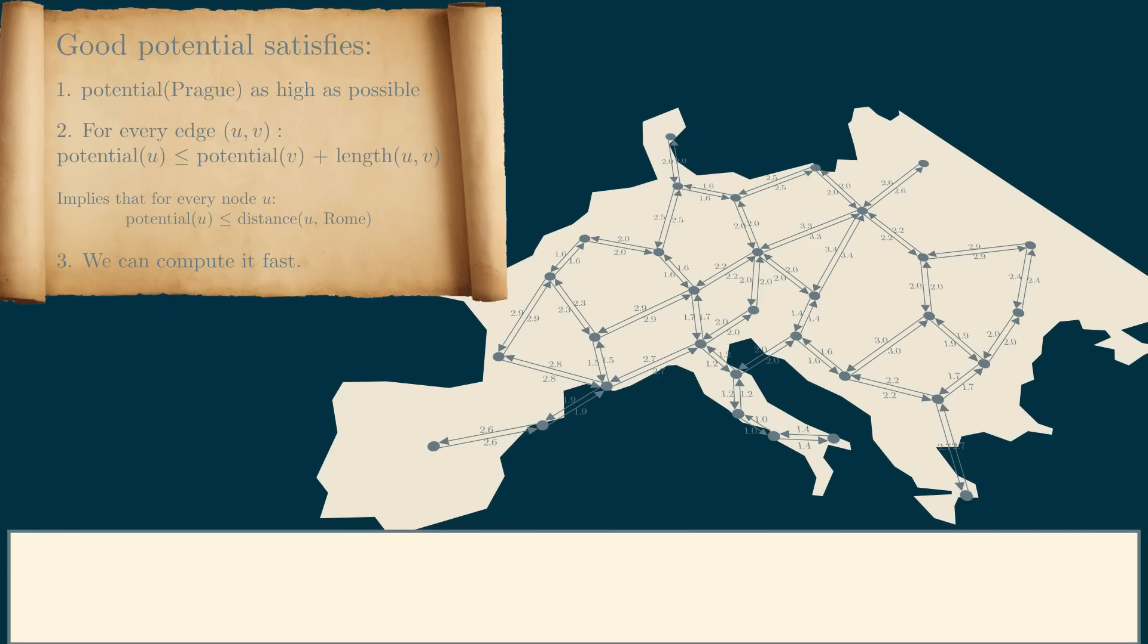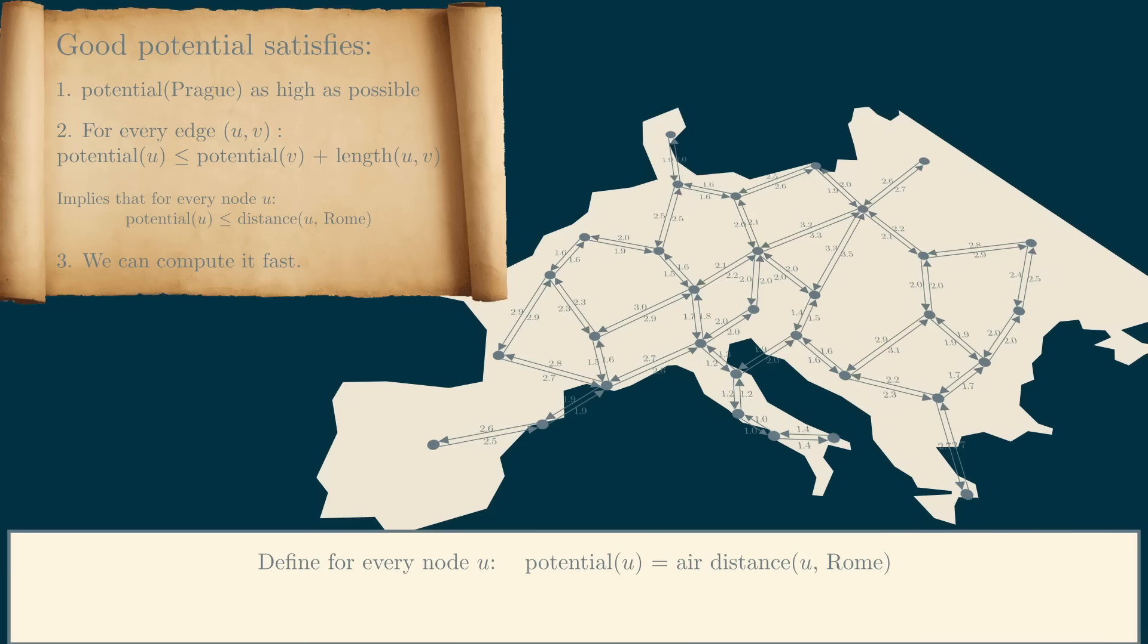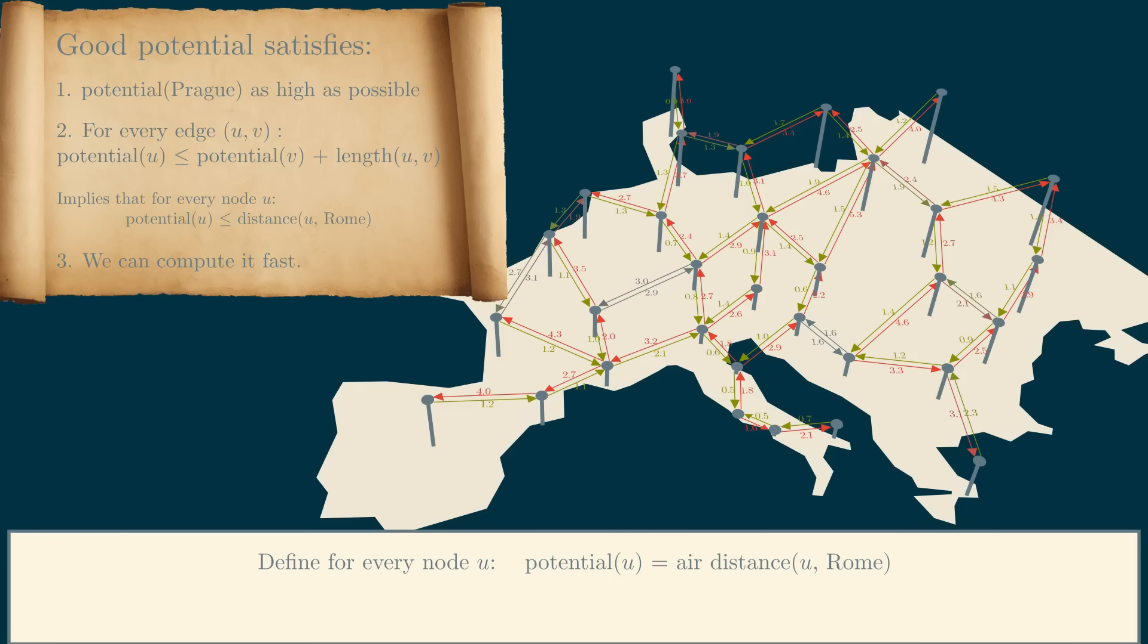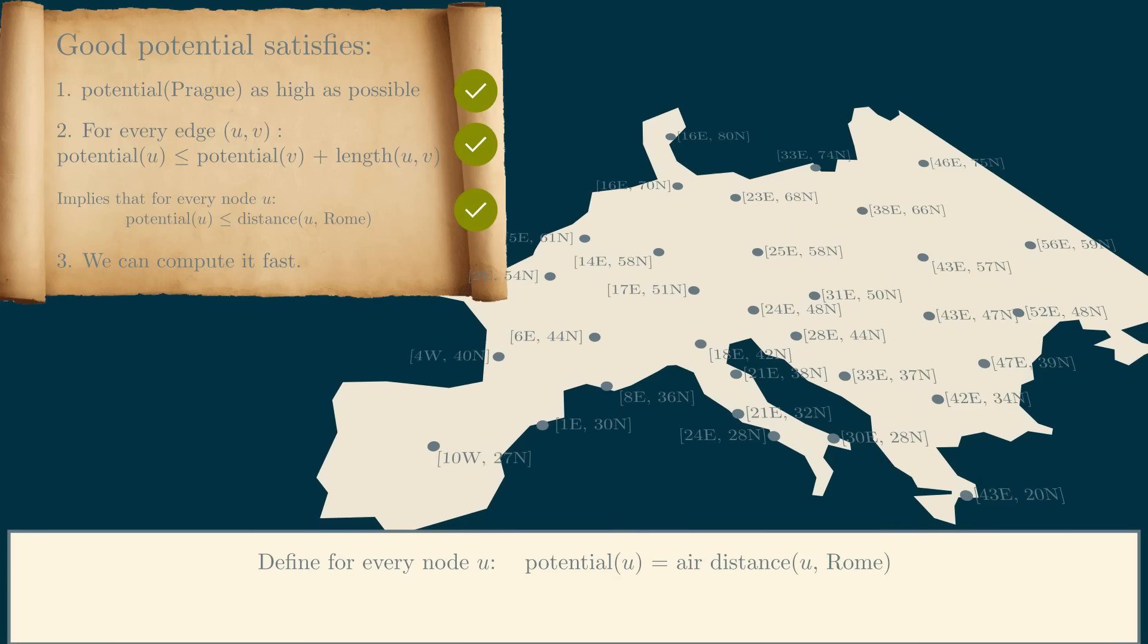One good choice of potential is to make it not the actual distance from that city to Rome, but the straight-line air distance between it and Rome. For example, Prague is roughly 900 km away from Rome, which in our units is 2.9, so its potential would become 2.9. We compute the potentials of other nodes the same way. This potential approximates the true distance from Prague to Rome quite decently. It also clearly is an optimistic estimate of the actual distance to Rome, and I again leave checking the more complicated inequality to you. Finally, it's also easy to compute it if we know the geographical locations of the cities on the map. If you're a flat earther, just plug the two positions into the Pythagorean theorem. If not, the formula is a bit different, but it's the same story.